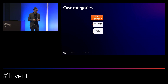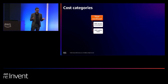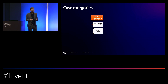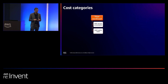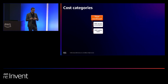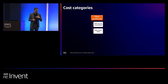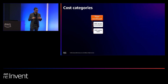Then we have the AWS native tools. Some of them are included and do not add any additional cost of usage, and some do add some costs. These are things like CloudTrail, CloudWatch, those types of native tools.